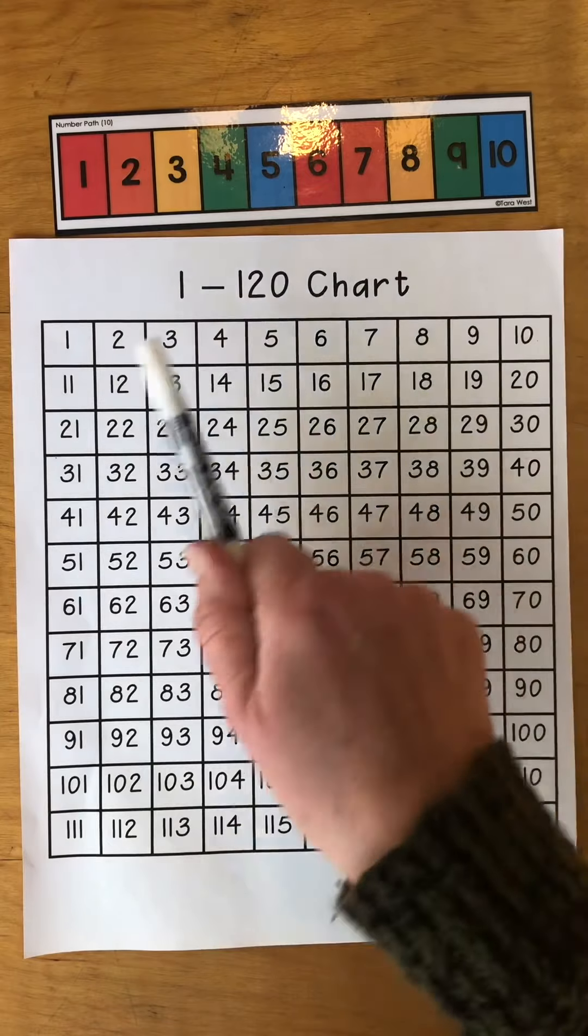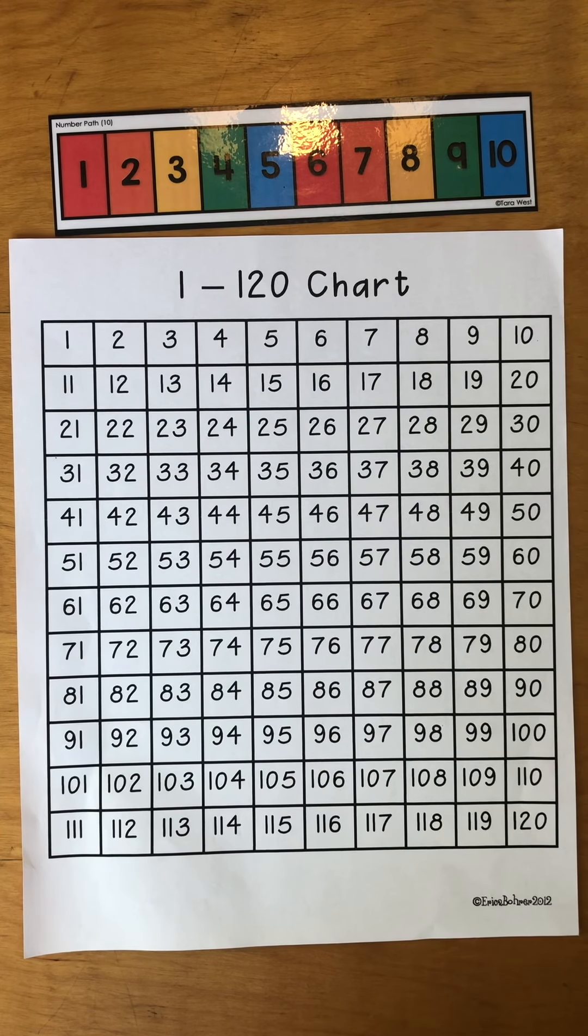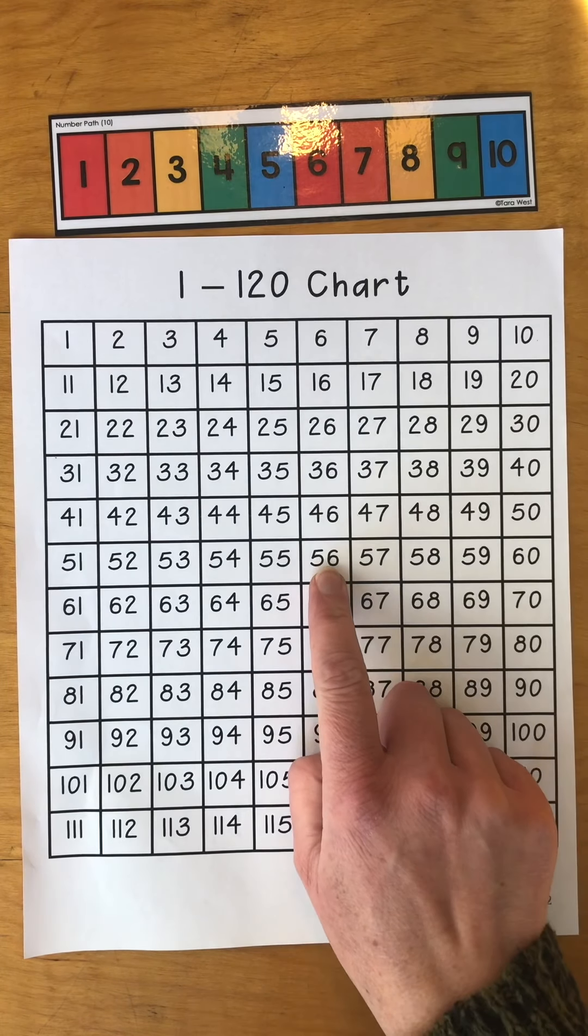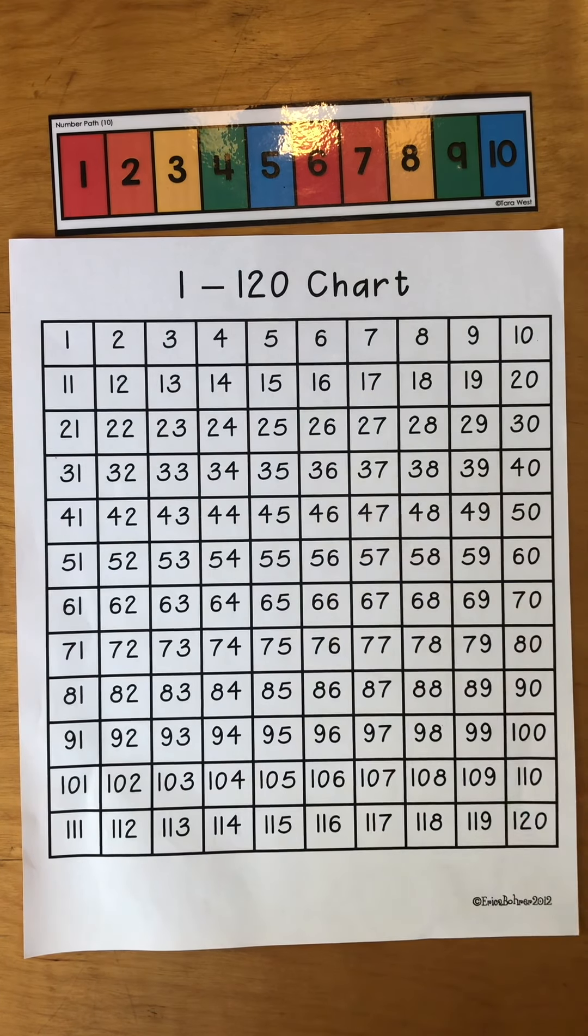All right. You have a smaller version of your number chart. You can always get that out and use it as you need to. You could also ask somebody to help you. You could say, tell me a number and I will tell you the number that is one less, or you could be the teacher and you could tell that to somebody else. You could say, what's one less than 56 and see if they get it right.